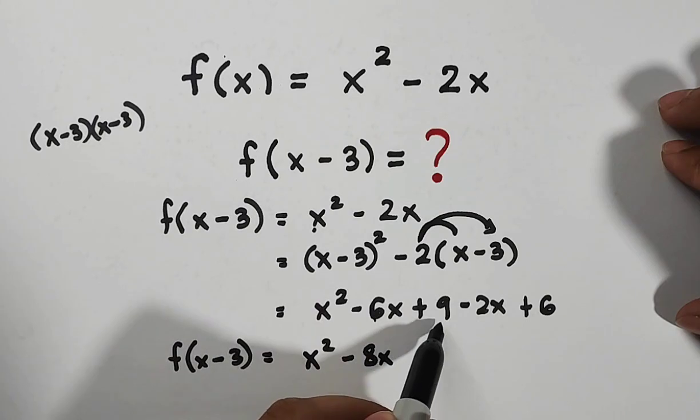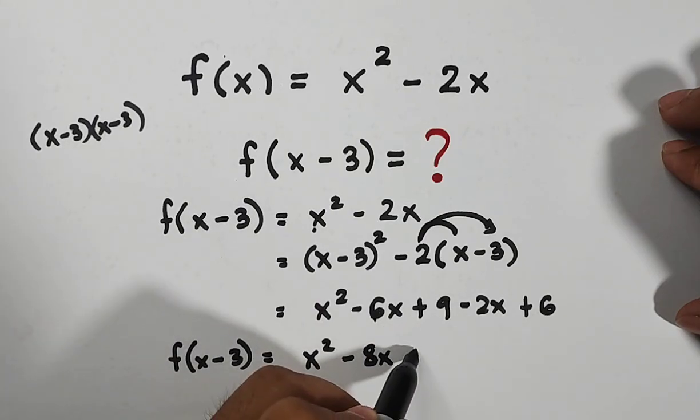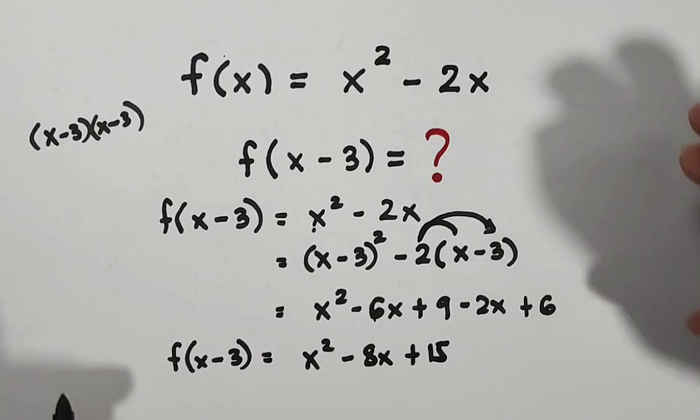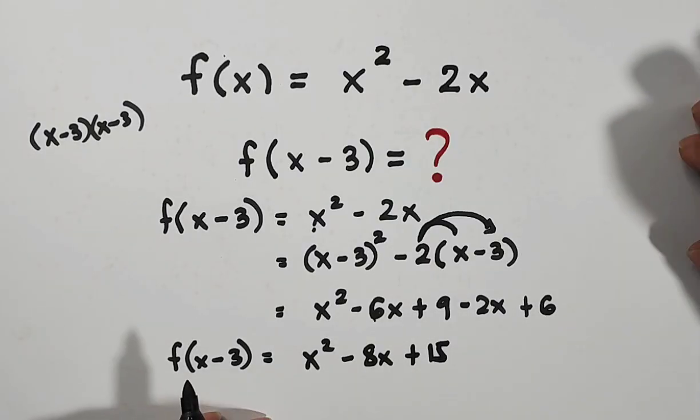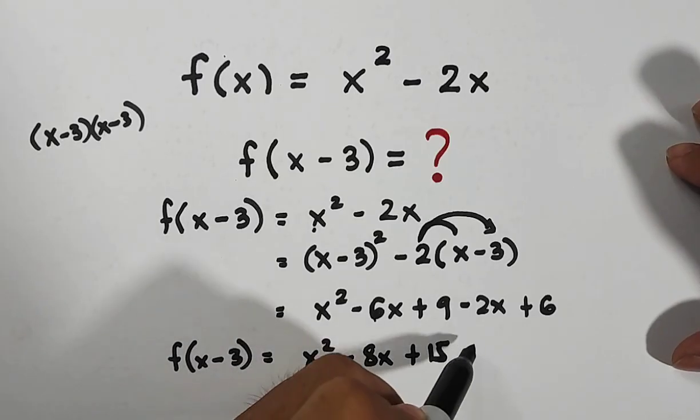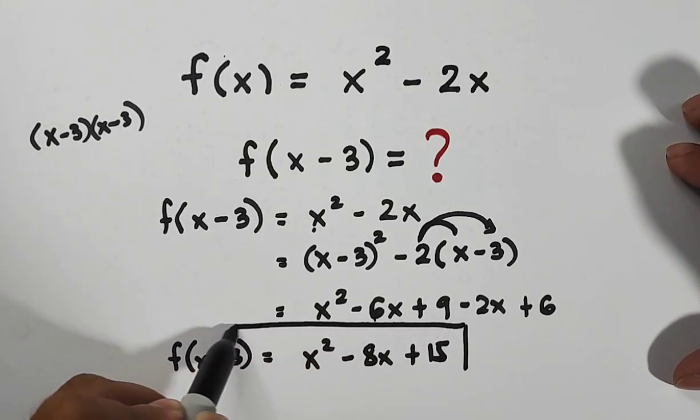For the constant we have 9 plus 6 that is equal to plus 15 or positive 15. So here's the value or the evaluated form of f(x - 3) that is equal to x squared minus 8x plus 15.